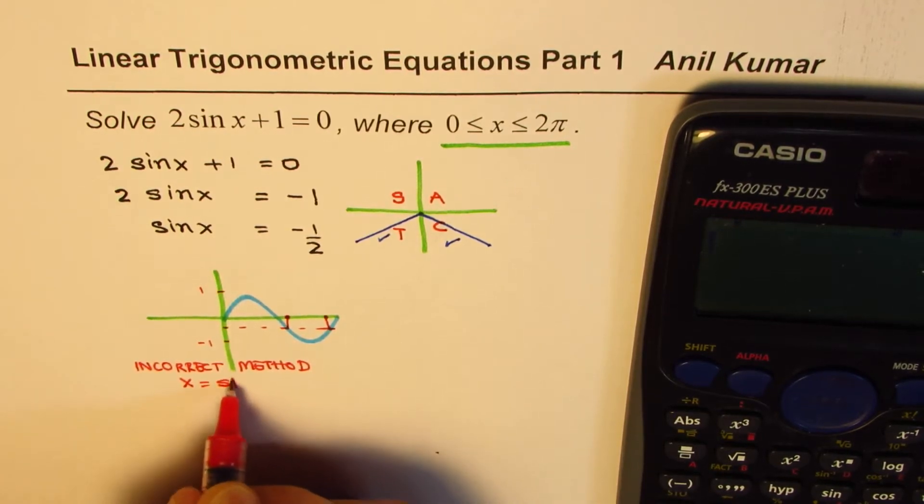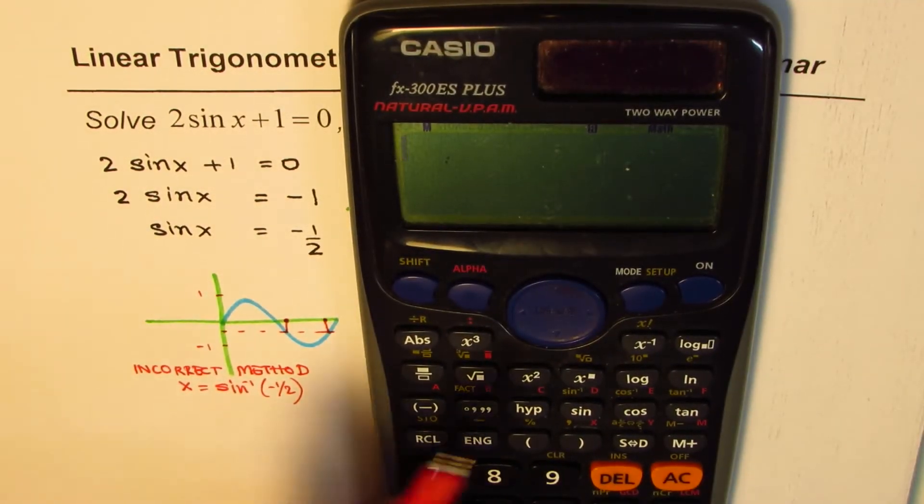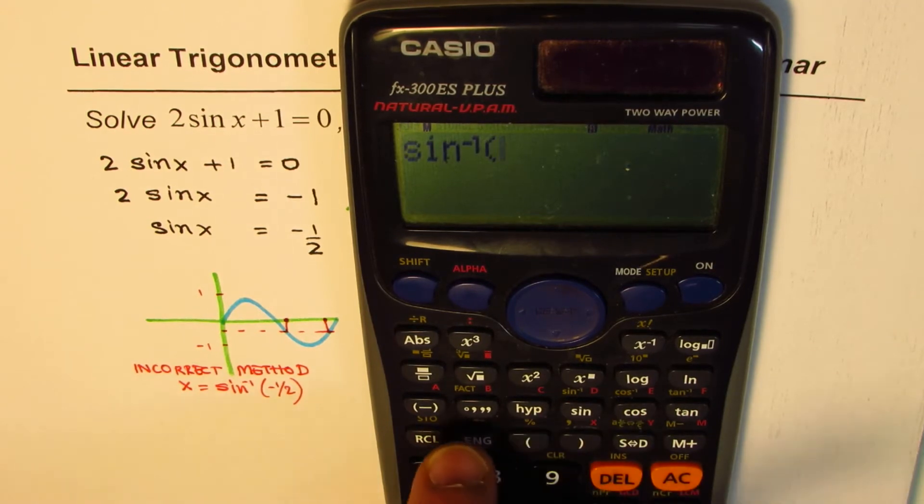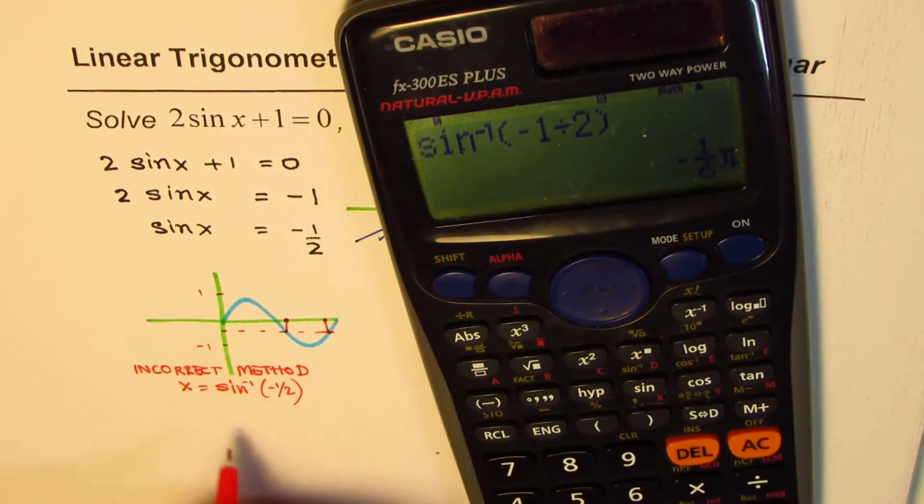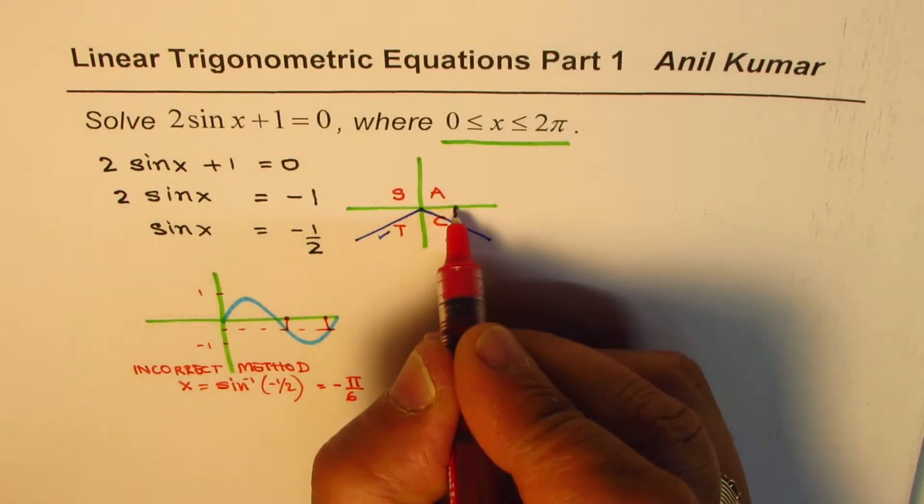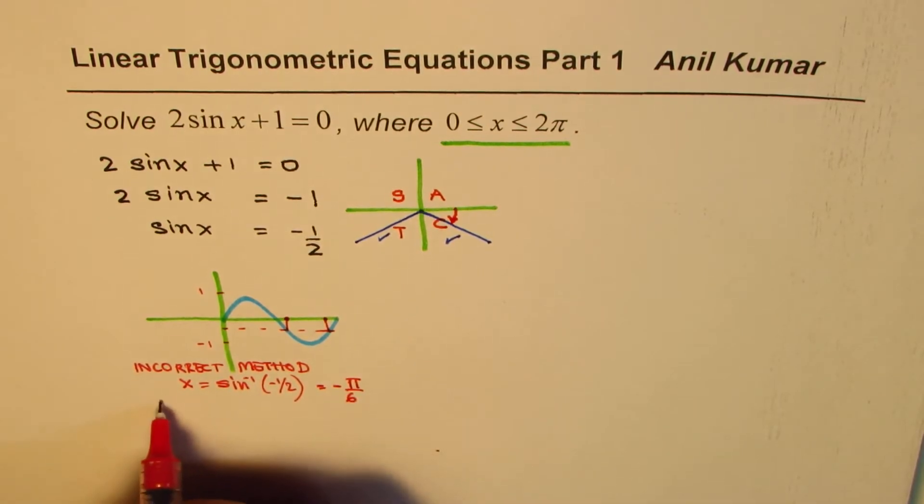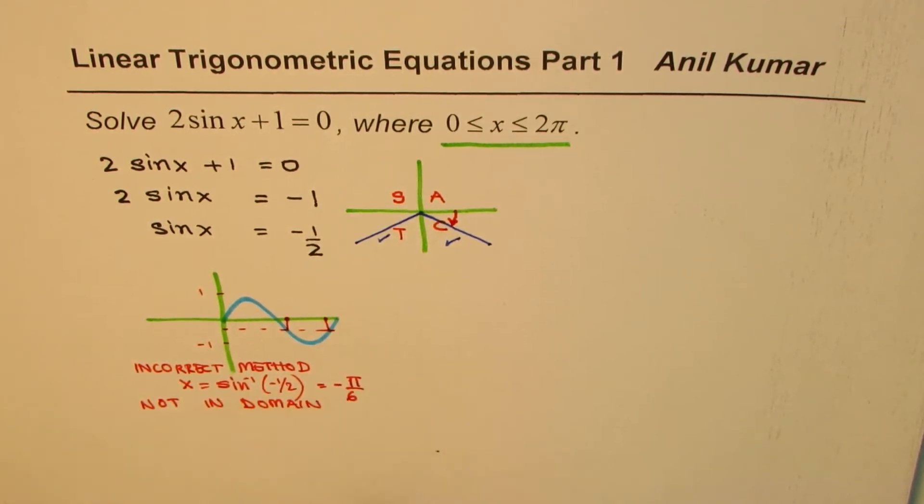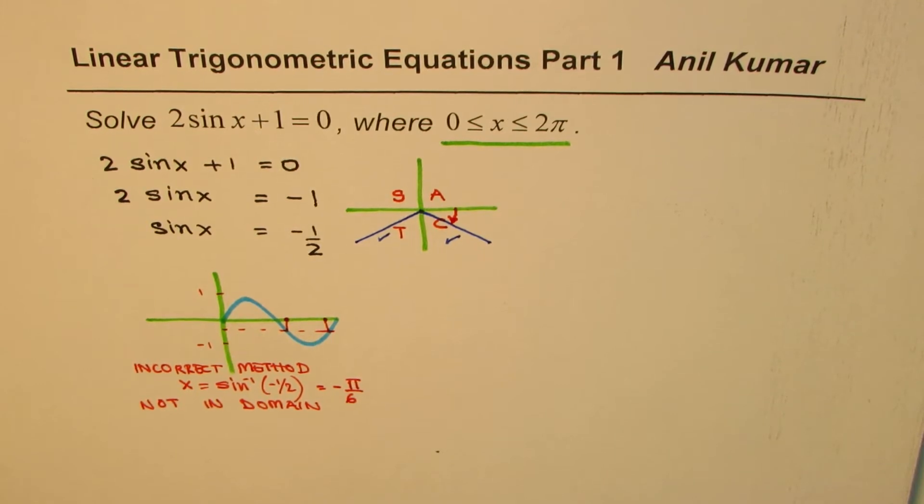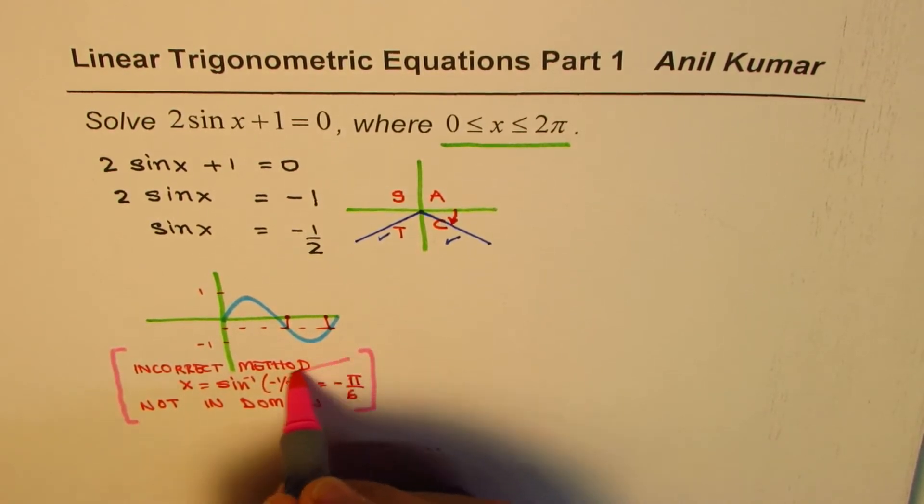From here if you quickly write x equals to sine inverse of -1/2, let's do sine inverse and within bracket we need to write -1/2. That gives us -π/6. Now -π/6 is not in domain. So therefore this is not the correct solution. It really doesn't work if you go directly using a calculator. So this is not the correct method.